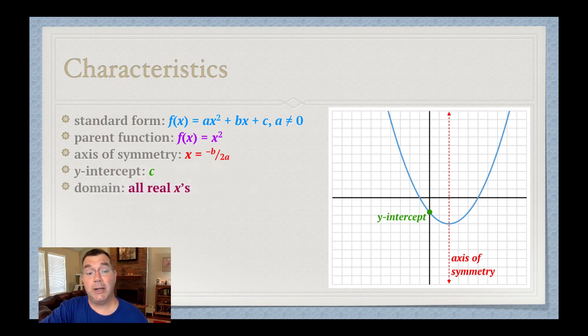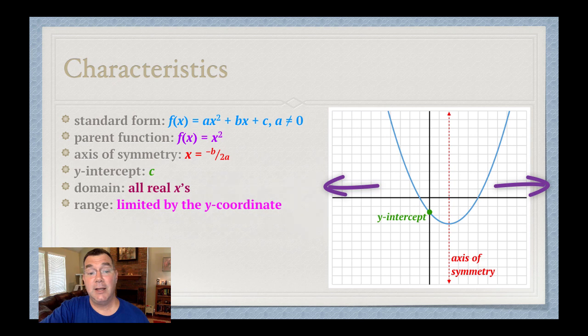The domain is going to be all real x's because this graph goes left to negative infinity and right to positive infinity. The range, though, is not going to be all real y's because it's limited by that vertex there. And as I was mentioning before, notice that the axis of symmetry does go directly through the vertex. It has the same x coordinate as the vertex. So when I'm finding the axis of symmetry, I'm also finding the x coordinate of the vertex.